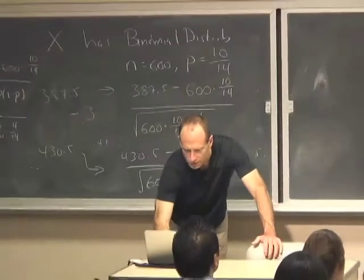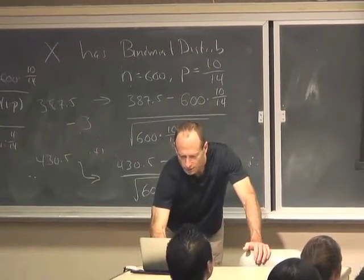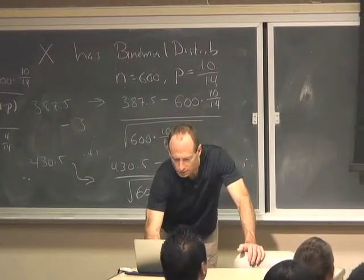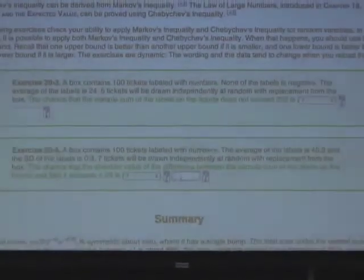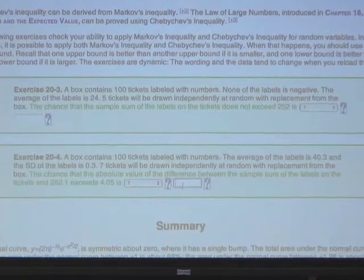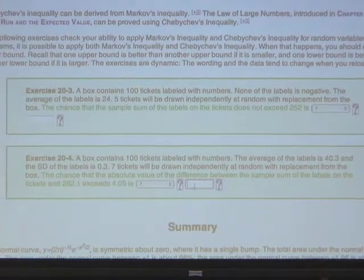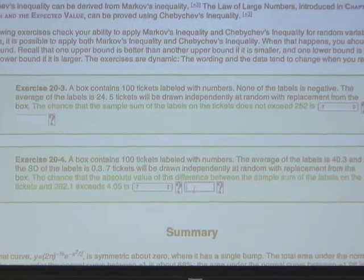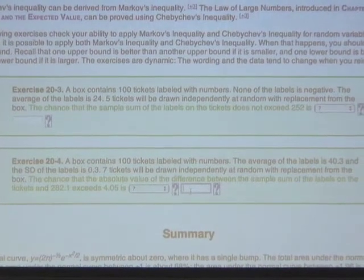So let's look at an example here. We have a box of 100 tickets labeled with numbers. We know the mean of the box, and we know the SD of the box. But we don't know the numbers in the box.